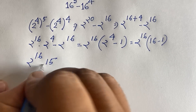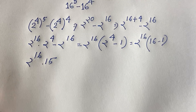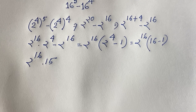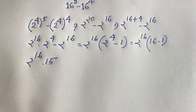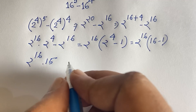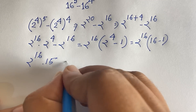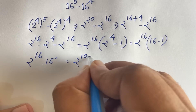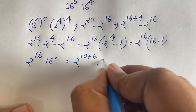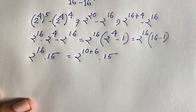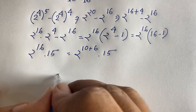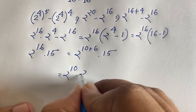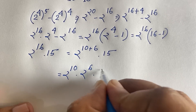Since 16 minus 1 equals 15, this simplifies to 2 to the power 16 times 15. This is our simplified final form. To evaluate it numerically, we can write 2 to the power 16 as 2 to the power 10 plus 6, which equals 2 to the power 10 times 2 to the power 6 times 15.